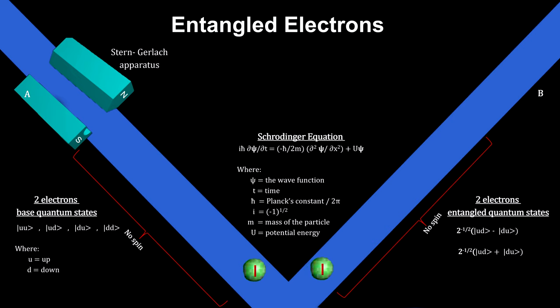Now we send one of the electrons down channel A and the other down channel B. As they travel, they will not exhibit any spin, much like the coins did not exhibit heads or tails.